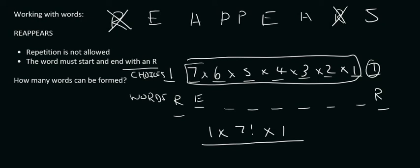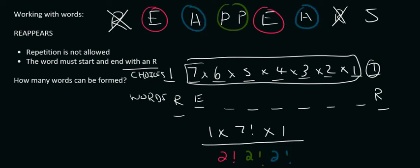Now what is repeating from the leftover stuff? Well, we've got two E's that are repeating, so we'll put a 2 factorial. And then the two P's are repeating, so 2 factorial. And then we've got two A's that are repeating, so 2 factorial. We won't use the R's. And so if you work that out, that's going to give us 630.